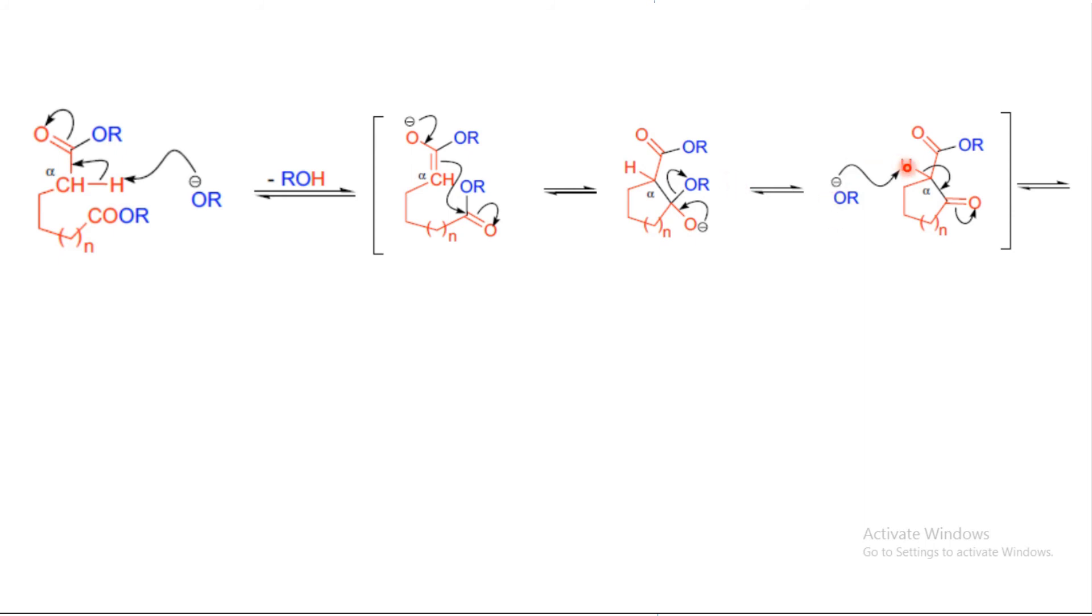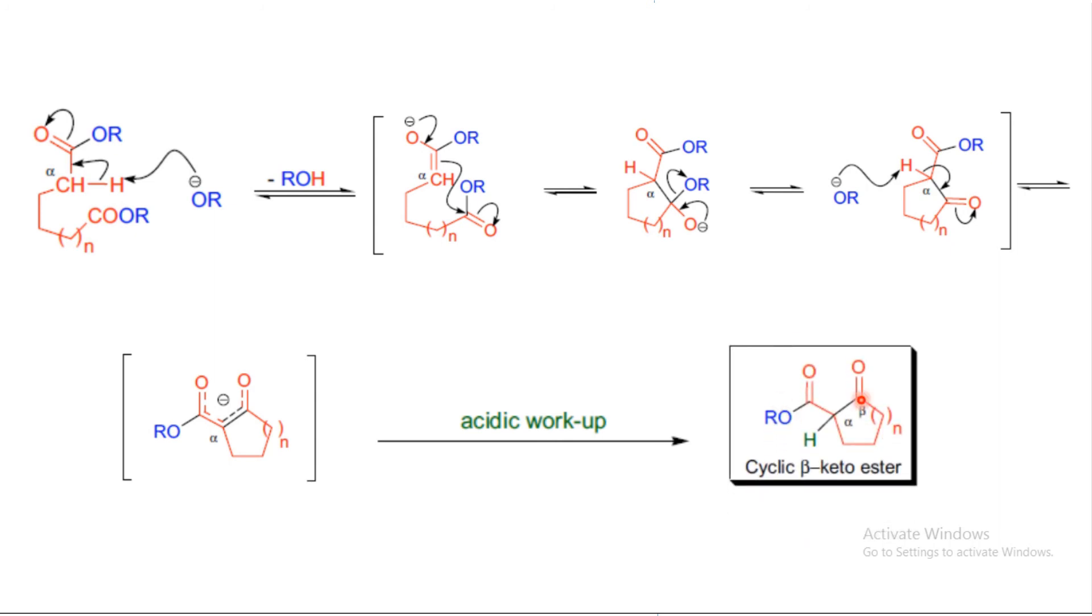That O-minus ion will take the very acidic proton at the alpha position between two keto groups, leading to enolate formation. Upon workup, that enolate will be quenched with a proton and we get the cyclic beta-keto ester. This reaction is known as Dieckmann condensation.